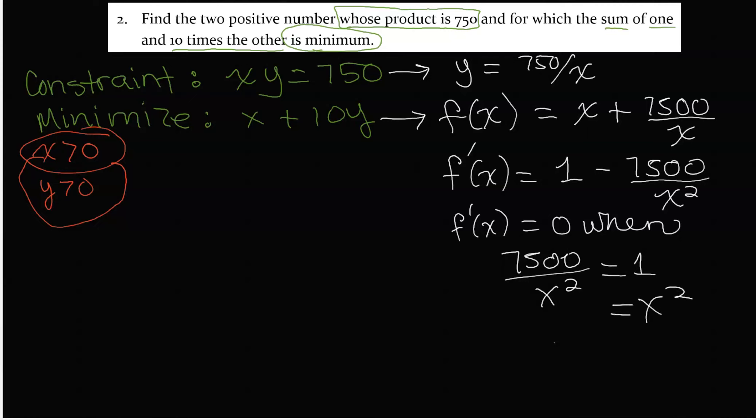X squared equals 7500. Square root both sides: X has to be square root of 7500, which reduces to 50 square root of 3. We're only going to take the positive, not the negative, because X is a positive number. This is not an integer; it is actually an irrational number.